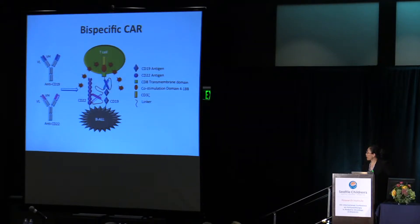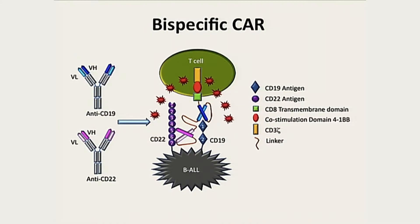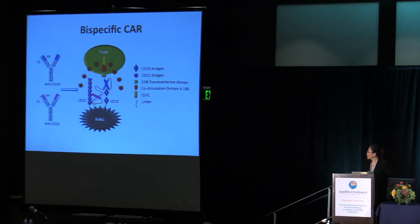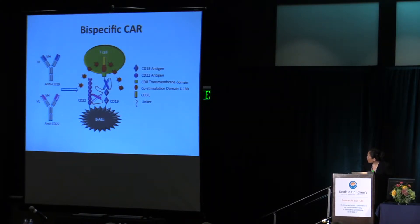This is a schematic diagram showing the bispecific CAR structure. The CD19 and CD22 binding domains were derived from anti-CD19 or anti-CD22 monoclonal antibodies. These binding domains were connected with different linkers and then connected with a transmembrane domain, and eventually linked with co-stimulatory and CD3 zeta signaling domains.